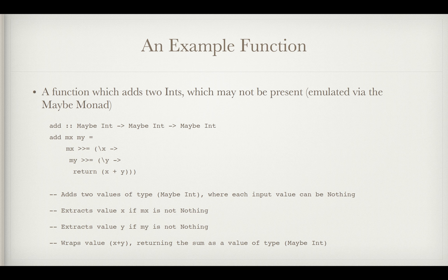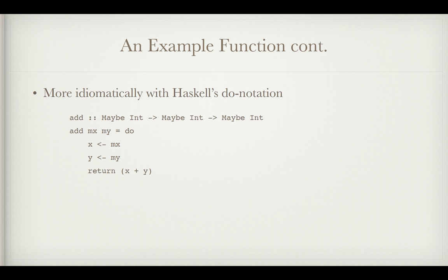So here's an example function that adds two maybe ints. Just ignore this part up here. Just look at the type, maybe int to maybe int to maybe int. So what this does is it adds two values of type maybe int, and it extracts X if MX is nothing, extracts Y if MY is not nothing, and it wraps the value X plus Y if you do not encounter nothing that time, which wrapping X plus Y gives you maybe X plus Y. Otherwise we don't get anything back. It'll stop short at nothing. And here's a more idiomatic way to do this. You can see that this kind of resembles an imperative program. X, Y, and return X plus Y.